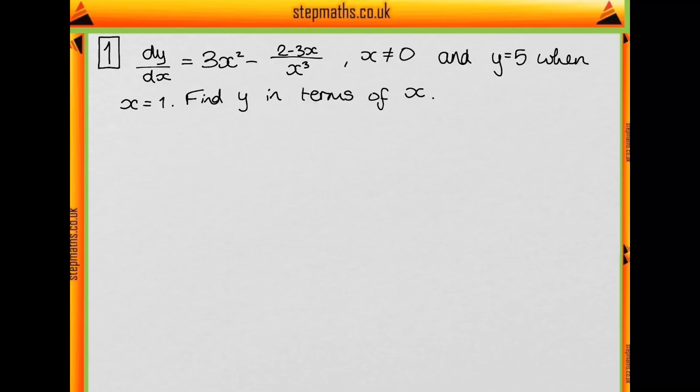So we want to find y equals something involving x. To do this we're going to integrate because if we integrate dy/dx we get y which is what we want. So have a go at integrating this now. Remember that with integration we can do it by each piece. So we can integrate this and then integrate this and do this minus this. So let's just write that out.